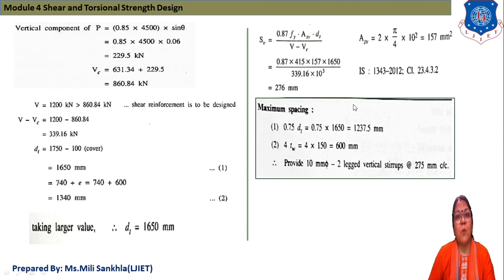We find out maximum spacing. First relation is 0.75 DT. 0.75 into DT 1650 that is equal to 1237 mm. And second is 4 into thickness of web 4 into 150 that means 600 mm. Both values are maximum values. So we provide stirrups 10 mm diameter two leg vertical stirrups at spacing 275 mm center to center. Here we stop. In next session we solve another example.